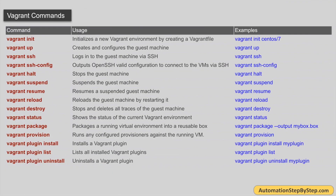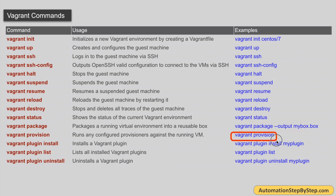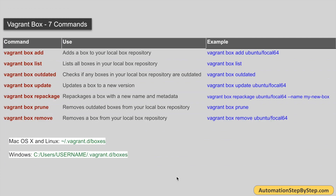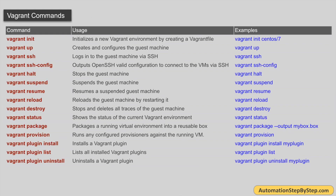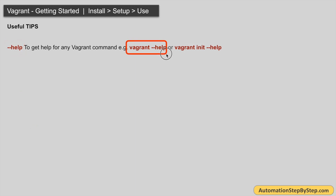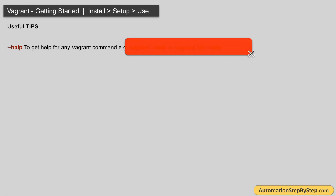vagrant destroy stops and deletes the virtual machine. vagrant status shows the current status of the Vagrant environment — for example it shows the default machine is powered off as configured in our Vagrantfile. vagrant package packages a running virtual machine into a reusable box. vagrant provision runs configured provisioners. You can also install and list plugins using vagrant plugin commands. You can use the --help flag with any Vagrant command to see all available options — this is very handy.